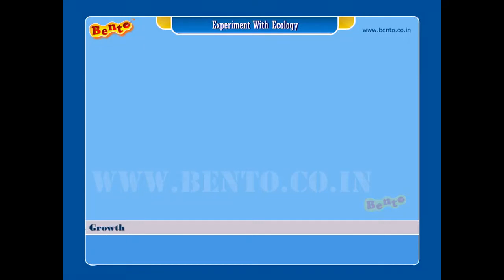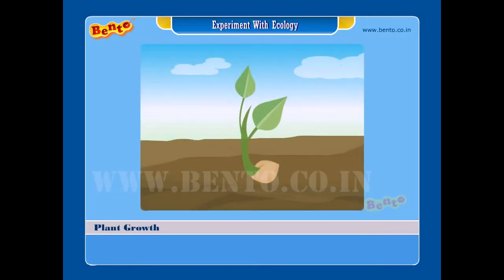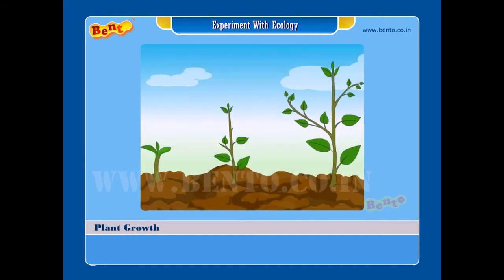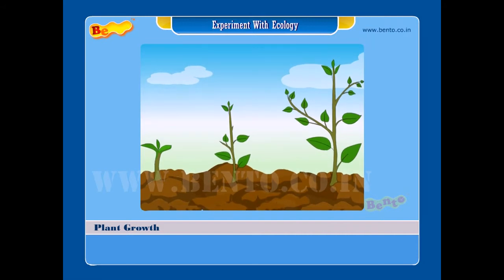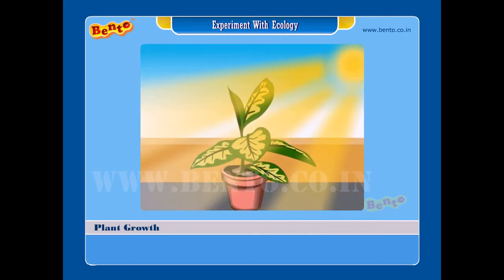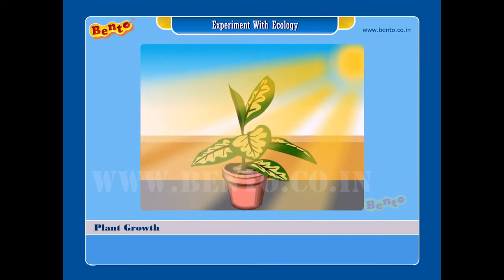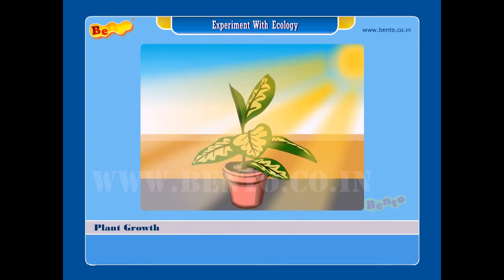Plant growth. Seeds germinate and grow into small seedlings. These seedlings require certain conditions for their growth. Proper light and temperature are required for the formation of leaves and the development of chlorophyll in the leaves.